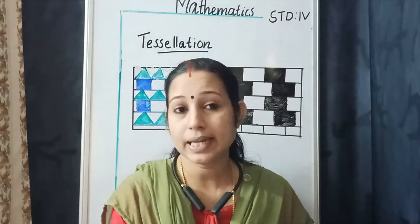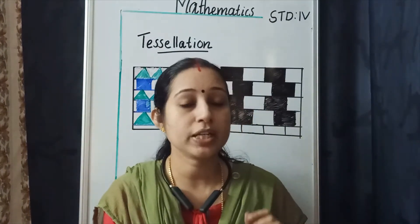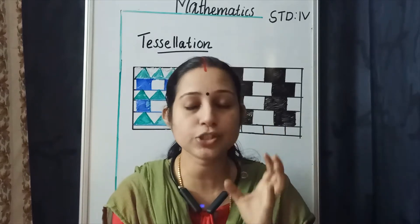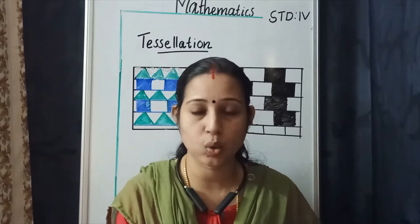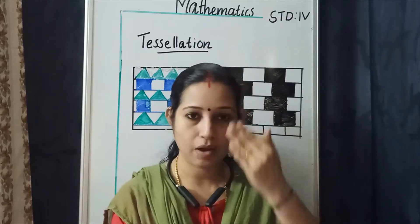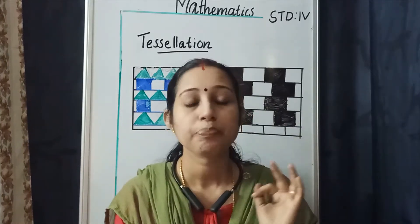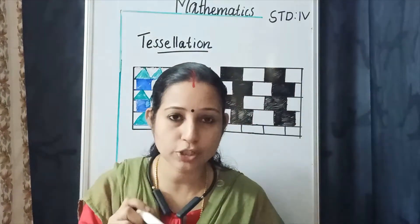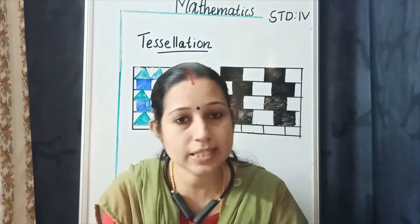Then symmetry — symmetrical figures means an object is divided into two halves. If each half is exactly the same, that type of figure is called a symmetrical figure. For example, our body and our face are examples of symmetrical figures. The line that divides the object into two halves is called the line of symmetry.